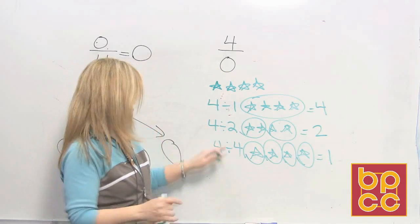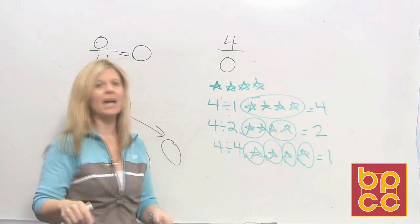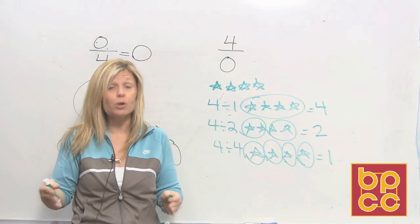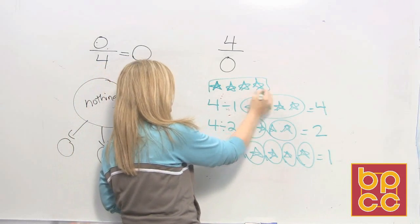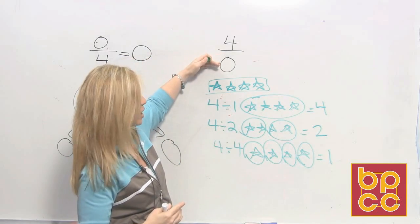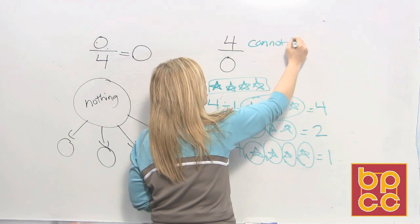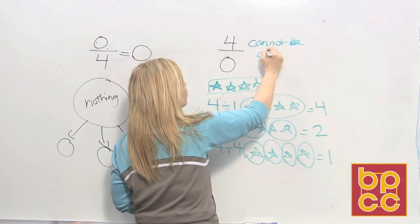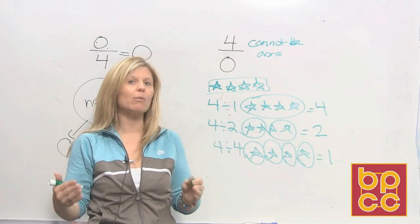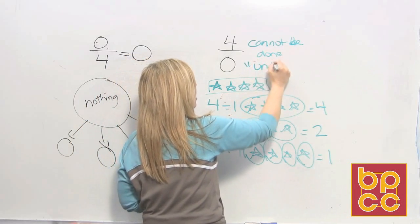So you have to understand the concept of division means to break into groups. So now, can you take these 4 stars and divide them into no groups? It's physically impossible. You can't do that. Right now these 4 stars sitting here together are 1 group. So there is no way to divide into 0 groups. It cannot be done. If it cannot be done, then we can't put a number to it. There is no number that represents that. So because there is no number that represents it because we can't do the operation, we give it a new word. We say undefined.